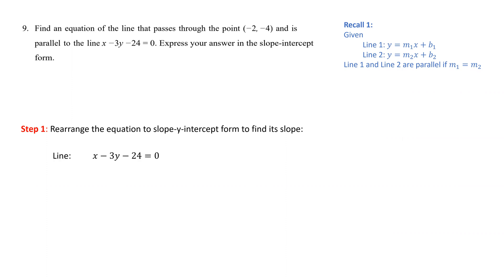So we move over 3y and switch the sides to get 3y equals x minus 24. Then we divide both sides, each term by 3, to solve for y. So the equation of the given line in slope y-intercept form is one-third x minus 8.